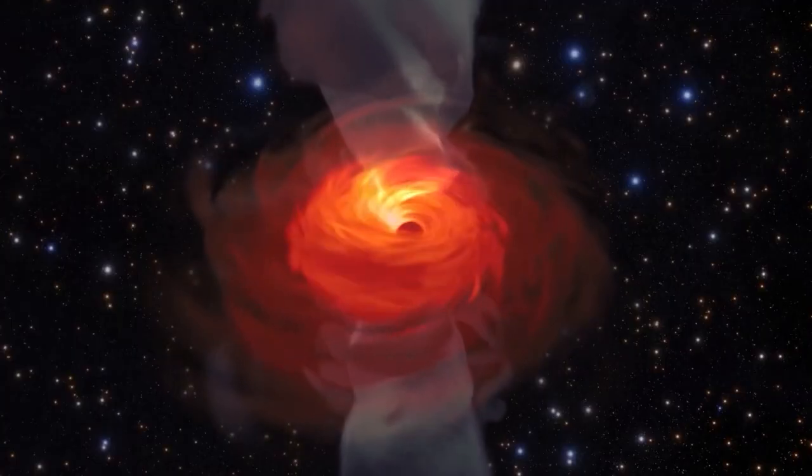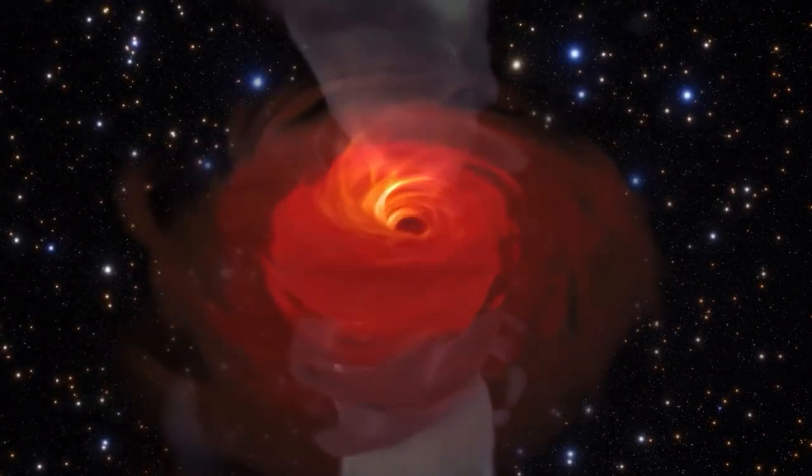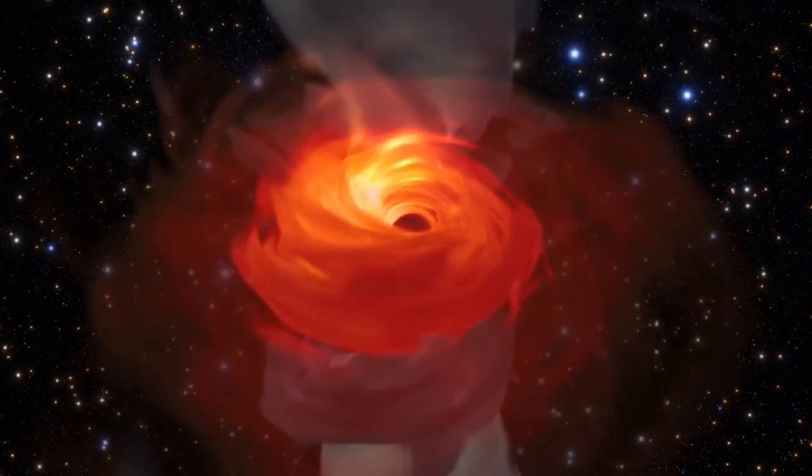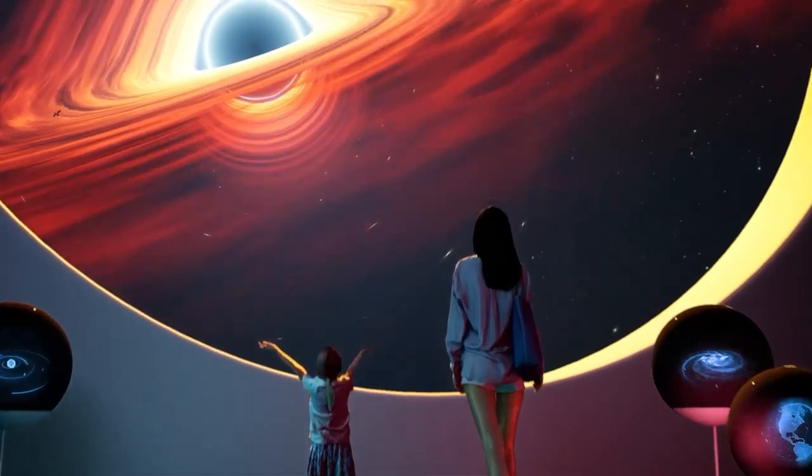Sagittarius A, the supermassive black hole at the center of our galaxy, is only 4.15 million solar masses in size.